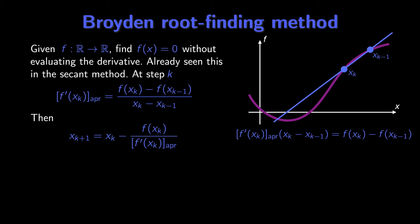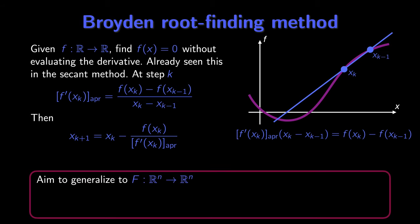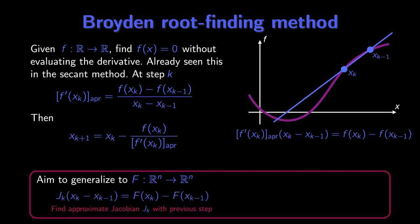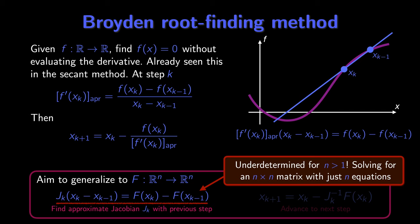And then we have a form that looks a little like a linear system. Suppose now that we try to generalize to n dimensions. We have a function F from ℝⁿ to ℝⁿ, and we might first try to find an approximate Jacobian J_k using the previous step. Generalizing our previous form, we write J_k times (x_k − x_{k-1}) equals F(x_k) − F(x_{k-1}). Once we have this Jacobian, we advance to the next step using x_{k+1} equals x_k minus J_k inverse F(x_k).